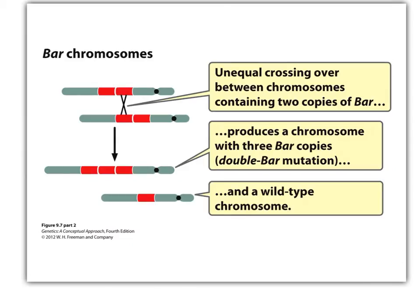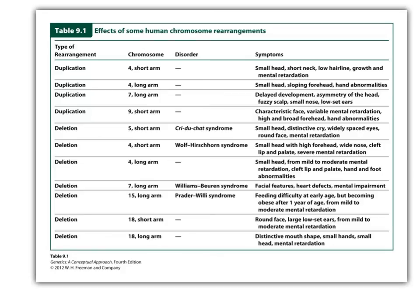In the case of another unequal crossing over, we can get a triplicate here too. This is a table of many human chromosome rearrangements that result from duplications or deletions — we're not going to memorize these. These are for your own benefit, just so you can see the relevance of this part of the topic.